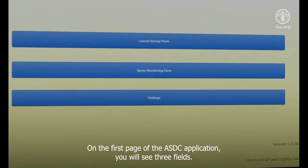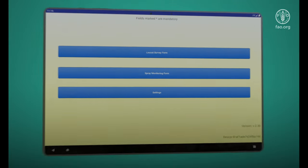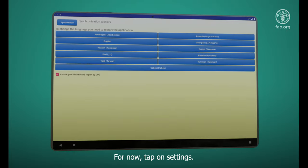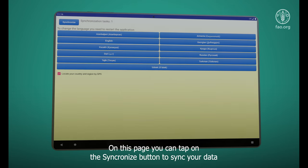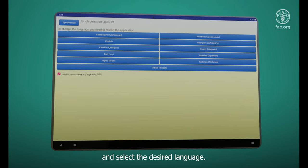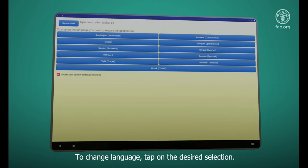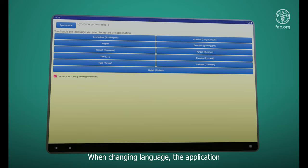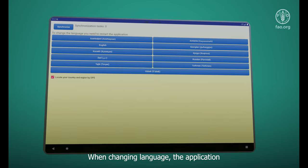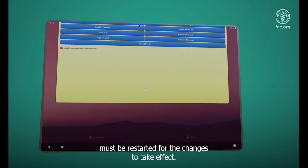On the first page of the ASDC application, you will see three fields. For now, tap on settings. On this page you can tap on the synchronize button to sync your data and select the desired language. To change language, tap on the desired selection. When changing language, the application must be restarted for the changes to take effect.